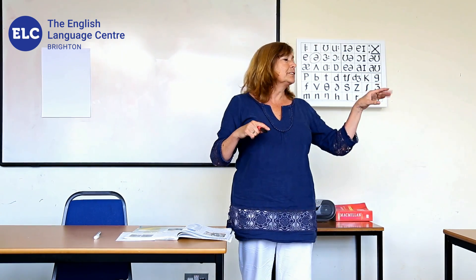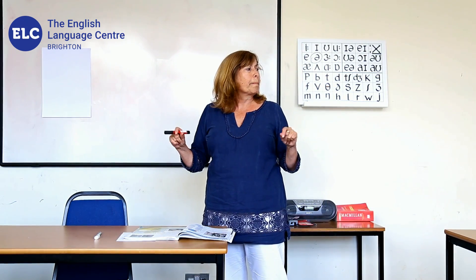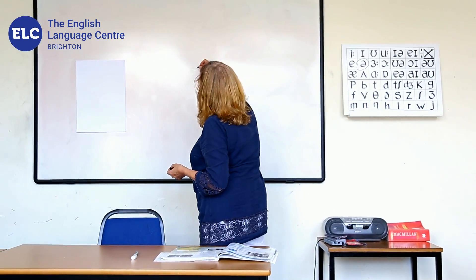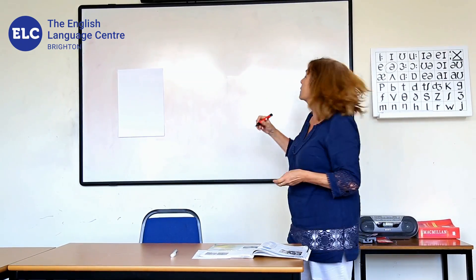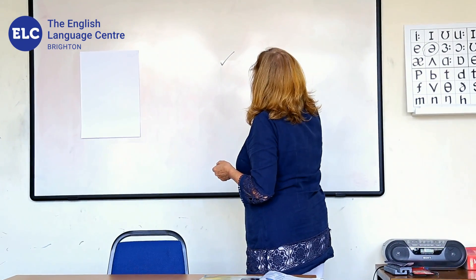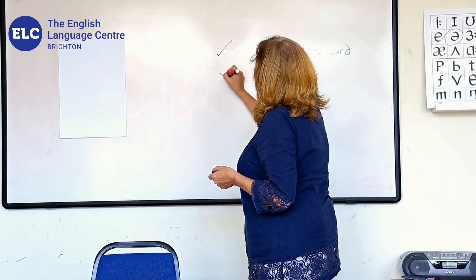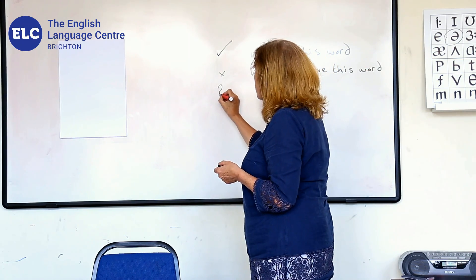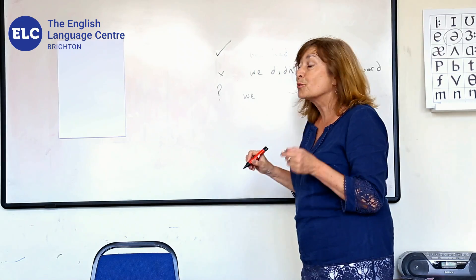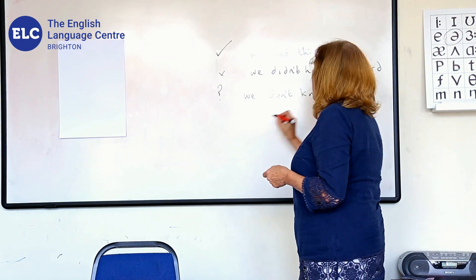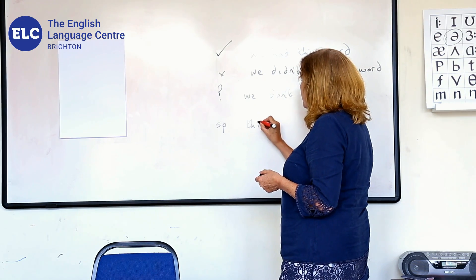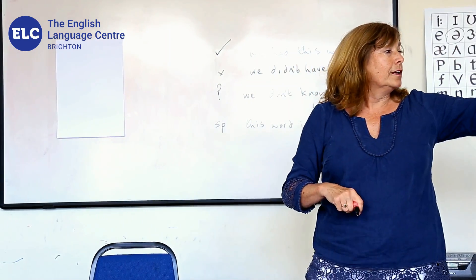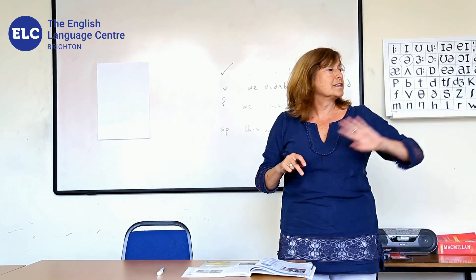At the end of five minutes, or when I think they've all done enough and they're running out of steam, I call an end to that and ask them to visit somebody else's sheet. They have to put a tick to say 'we had this word,' a cross if they didn't have the word, a question mark for 'we don't know this word,' and SP if they think the word is spelt incorrectly. So team A visits B, B visits C, C visits A.